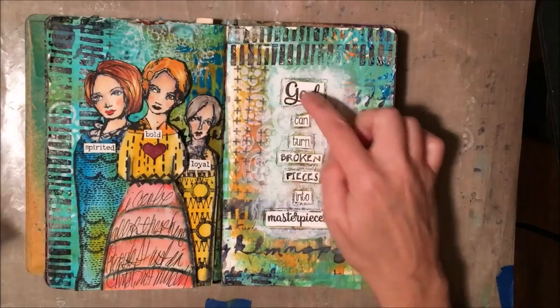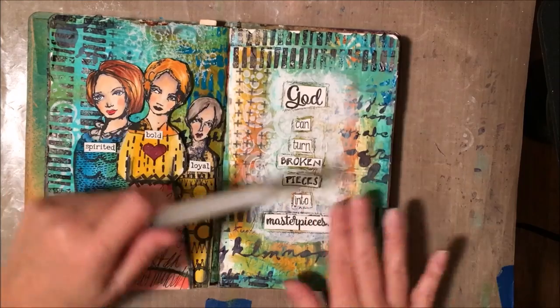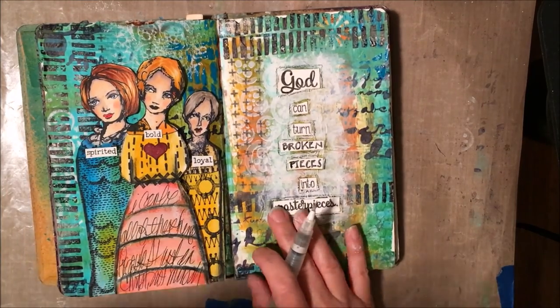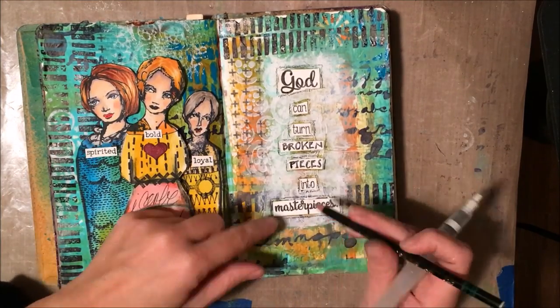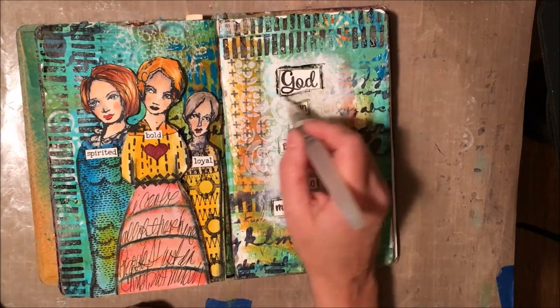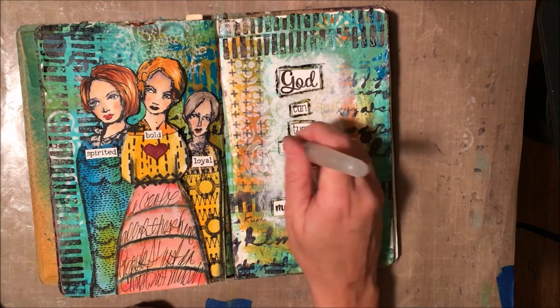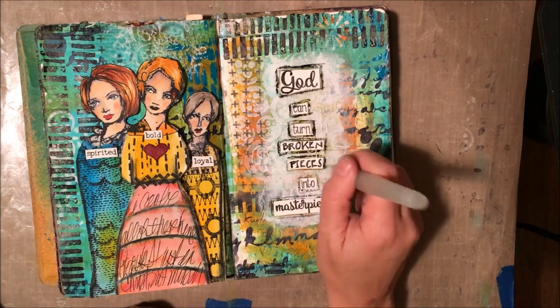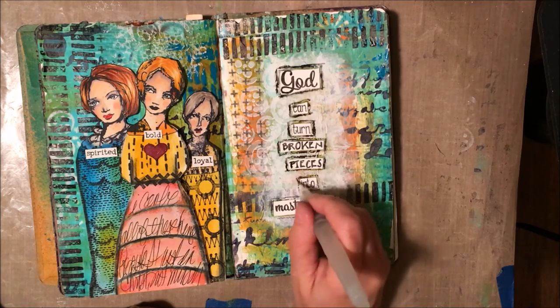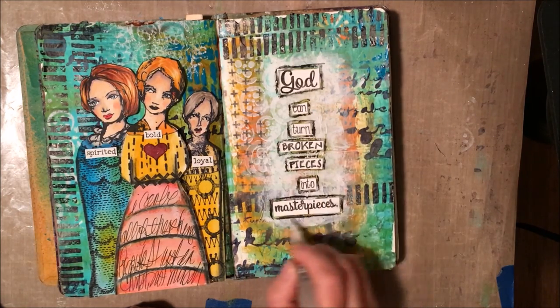So here you can see I added a sentiment that I just stamped on a piece of paper. And then I cut all the words apart so that it would fit in my journal. I did add a little bit of gesso in the background just so that sentiment pops out. And then I went around each of the words with a Stabilo pencil. And you can see when I hit it with the water, it reacts. And I'm just highlighting each of my words there using a water brush.